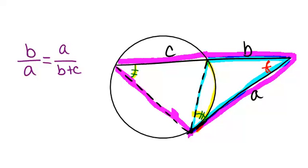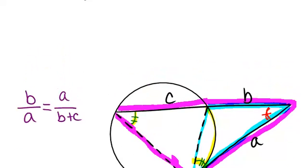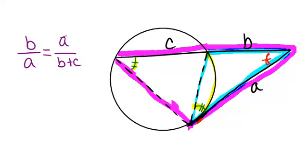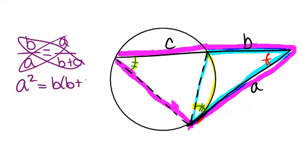Now if we cross multiply in order to rewrite that equation, we'll get back to exactly what we have up here highlighted in green. So when we cross multiply, we get A squared equals B times B plus C. So that's exactly the formula we were looking at before.